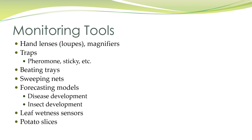Leaf wetness sensors — sometimes you'll see information on this, but it's not a good source of monitoring, I'm just putting it on there. Potato slices can be used to monitor for fungus gnats.